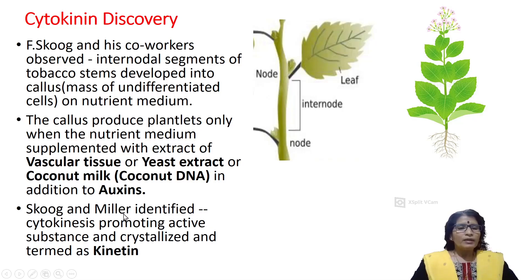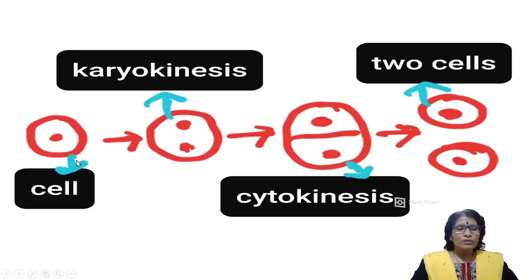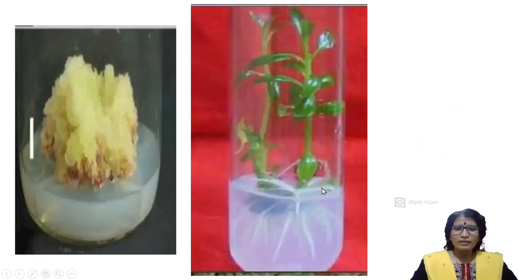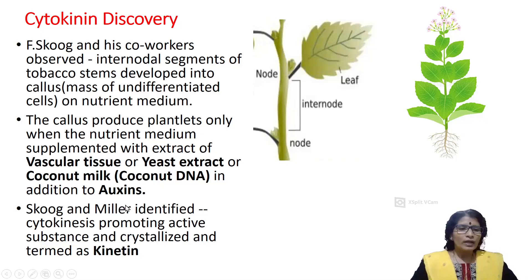Skoog and Miller identified a substance useful for cytokinesis and crystallized it, naming it kinetin. Cytokinesis is the division of cytoplasm during cell division. In cell division, first one nucleus divides into two nuclei — that is karyokinesis. Then the cytoplasm divides by formation of a wall between the two nuclei — that is cytokinesis. This cytokinesis-promoting substance, identified by Skoog and Miller, was crystallized and termed kinetin.